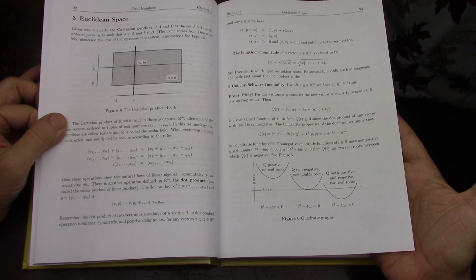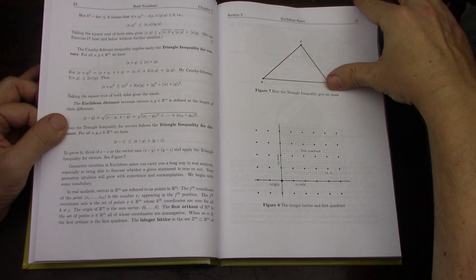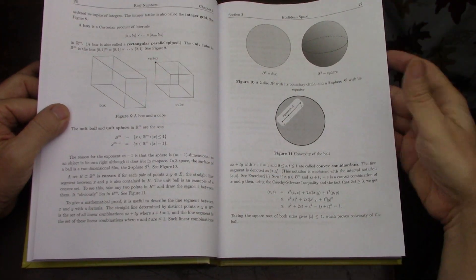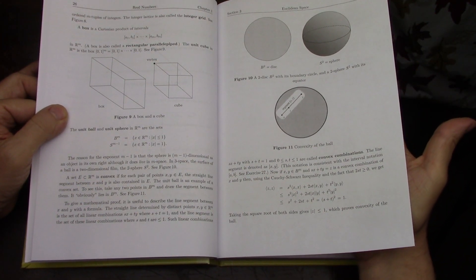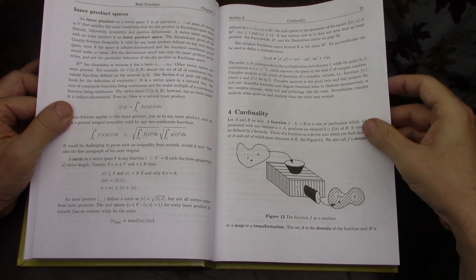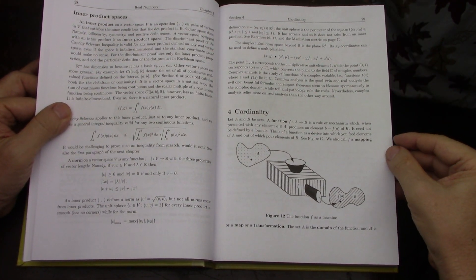Lots of examples. And it's got a ton of problems, which is really good. Now it doesn't have any answers, but for this type of book I don't think that really matters. Because a lot of the times what the problems are going to be are just proofs. It's a proof-based analysis book.